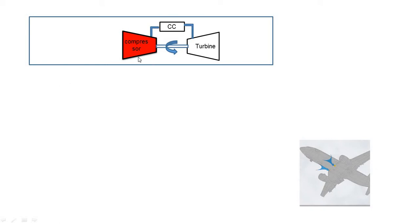In the gas turbine power plant, there are three components: compressor, combustion chamber, and turbine. This turbine produces some work, and by using this work the aeroplane gets power and takes flight. This air compressor is also used in our aircraft evaporative refrigeration system. Our diagram starts from the cell of the aircraft.